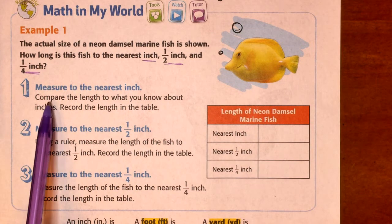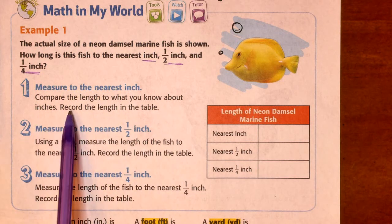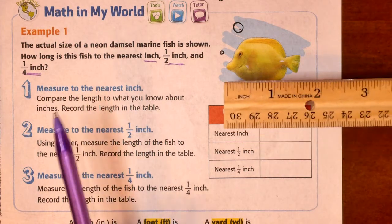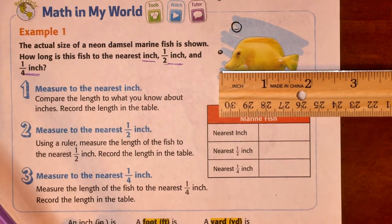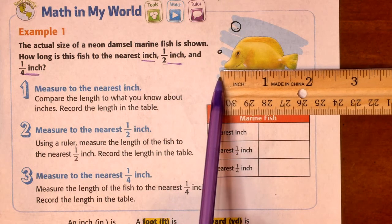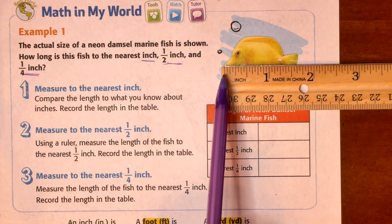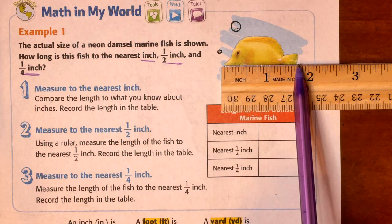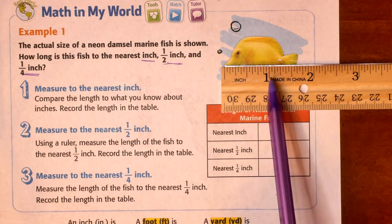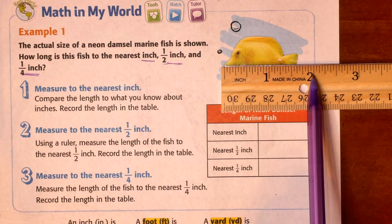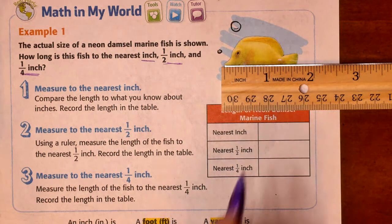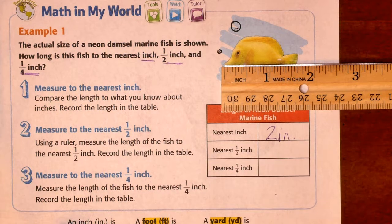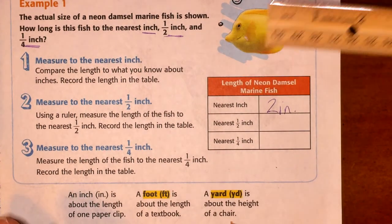Step one says compare the length to what you know about inches. Record that length on the table. So, we're going to measure to the nearest inch, and you're going to line up your ruler, this line here, right with the tip of the fishy's nose. You can see that the tail comes to about right here, but which inch is it nearest to? Is it nearest to the one, or is it nearest to the second inch? It is nearest to the second inch. So, we're going to record two inches. And that's how you abbreviate inch, IN.